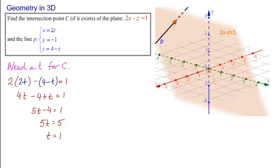Substituting back into here, we have C is x equal to 2 times 1, equal to 2; y equal to minus 1; and z equal to 4 minus 1, equal to 3. So that means C is the point (2, -1, 3).